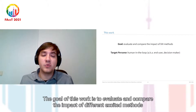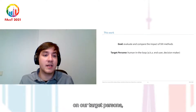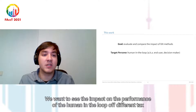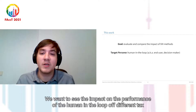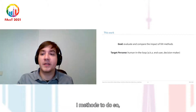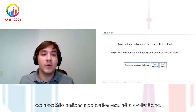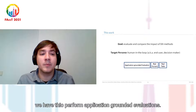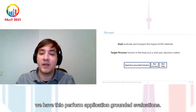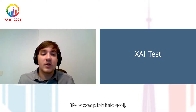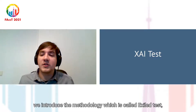The goal of this work is to evaluate and compare the impact of different XAI methods on our target persona, which is the human in the loop. We want to see the impact on the performance of the human in the loop of different XAI methods. To do so, we have to perform application-grounded evaluations. To accomplish this goal, we introduced a methodology called XI Test.